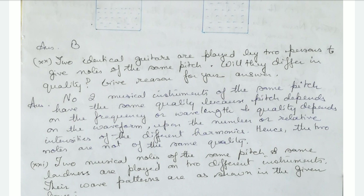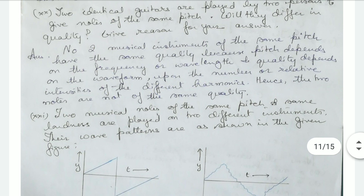Two identical guitars are played by two persons to give notes of the same pitch — will they differ in quality? No two musical instruments of the same pitch have the same quality, because pitch depends on frequency and quality depends on the waveform and the number or relative intensities of the different harmonics. Hence the two notes are not of the same quality.